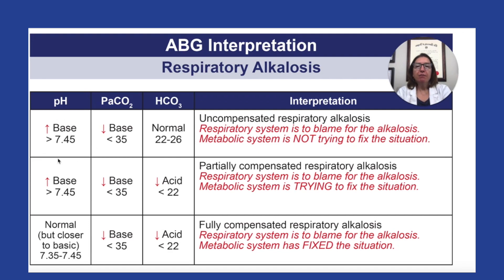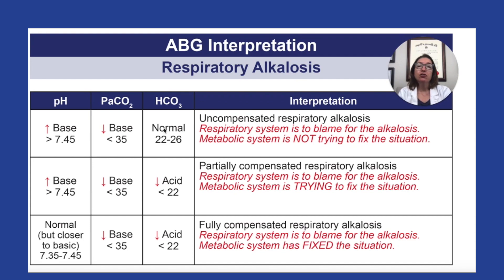When we look at the pH, if it is over 7.45, we know we have alkalosis present. We just need to see who to blame for the alkalosis. When we look at PaCO2, if that is low — under 35 — then we know the respiratory system is to blame. We have respiratory alkalosis. When we look at HCO3, which is bicarb, that represents the metabolic system. If that value is within the normal range between 22 and 26, that means the metabolic system is not trying to compensate for this respiratory alkalosis. So in this case, we have uncompensated respiratory alkalosis.